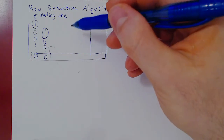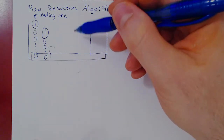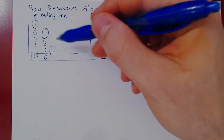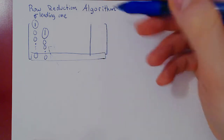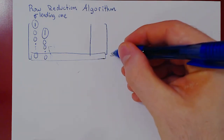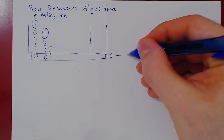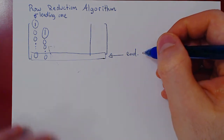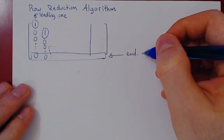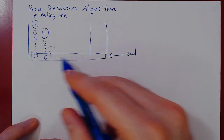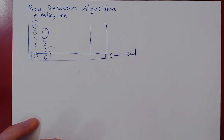Since there are only a finite number of rows, at some point you will reach the bottom row. And once you reach the bottom row, this will be the end of your row reduction. Now there's a subtle point here, because once you reach the bottom row, there are two different approaches.